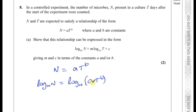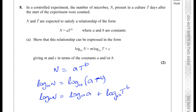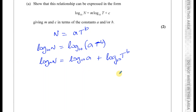Now I can use the laws of logarithms to split up this product. There's a product inside the logarithm that can be split up. So I have log base 10 of n equals log base 10 of a plus log base 10 of t to the power of b. The multiplication law states that if you have a product inside a logarithm, you can split it as a sum of the separate logarithms.